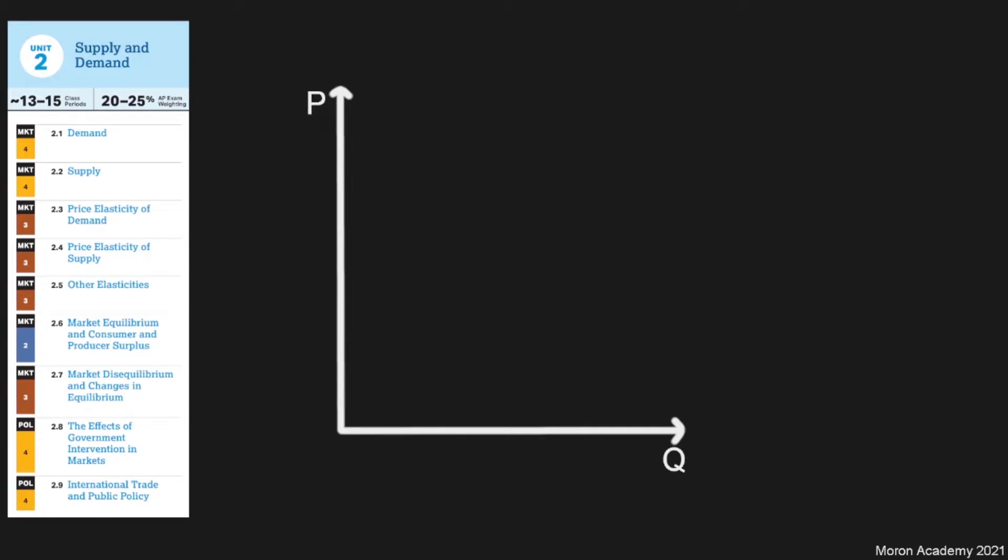Hello, today we'll be talking about lesson 2.1, which is demand. Demand looks like a straight line on the graph, where the y-axis here is price, and the x-axis here is quantity.